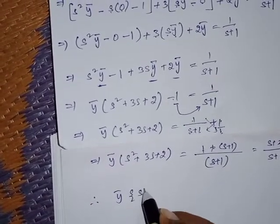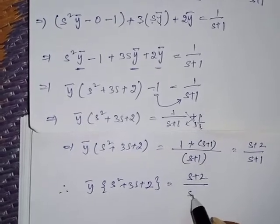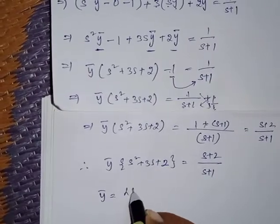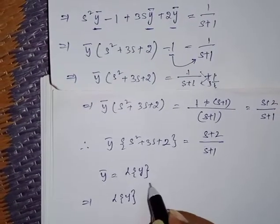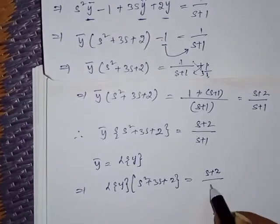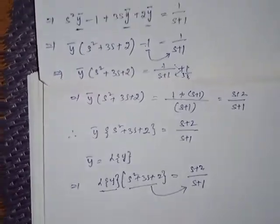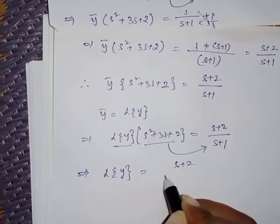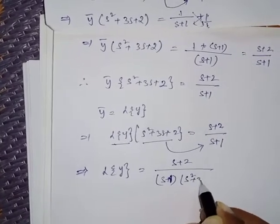Therefore ȳ(s² + 3s + 2) = (s + 2)/(s + 1). Since ȳ = L{y}, substituting gives L{y}·(s² + 3s + 2) = (s + 2)/(s + 1). We need to find only L{y}, so transferring the factor across: L{y} = (s + 2) / [(s + 1)(s² + 3s + 2)].